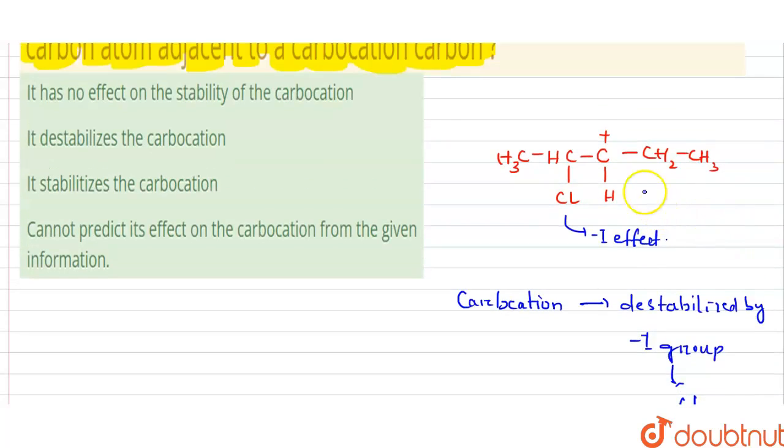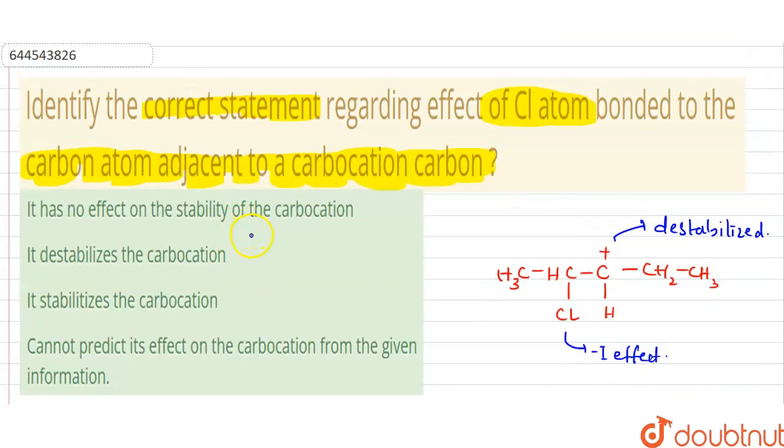So I can say that the carbocation is purely destabilized by the Cl group which is adjacently bonded to the carbon atom of the carbocation.